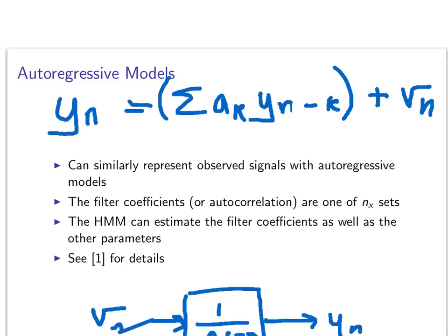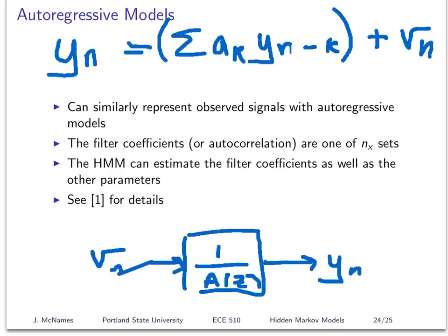Hopefully that gives you the flavor of hidden Markov models — how they're similar to and different from what we've been doing this term, and what the common algorithms are for working with them. There are things you can do with HMMs and things they don't do compared to continuous state space models. Speech recognition is a major application because you're dealing with finite words from a continuous signal. Any questions, comments, or additions?